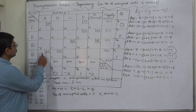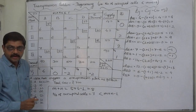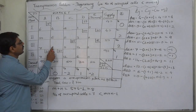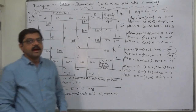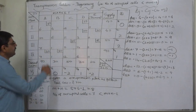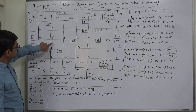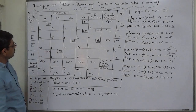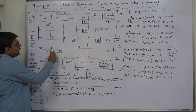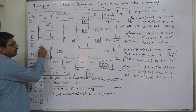Here both cells have the same negative dij value of minus 1, so we use the transportation cost as a tiebreaker. The cost of cell 3a is 7 and cell 3b is 1. Since our objective is to minimize cost, we select the cell with the minimum transportation cost — so we select cell 3b.